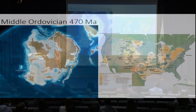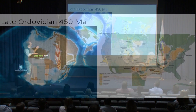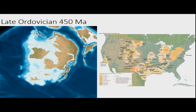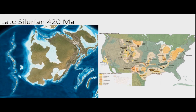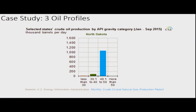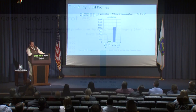Ordovician — a long time ago. Fish are starting to show up and the first algal things are starting to grow on the earth. Silurian — first bony fish. Very exciting times. That was a big deal — we went from not having bony fish to having them.